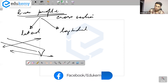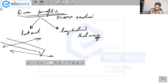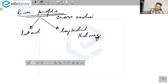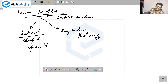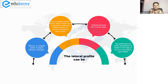The longitudinal profile is also called the thalweg. The lateral profile can be a steep V, an I-shaped profile, or an open V. The steep V or I-shaped profile occurs in gorges and canyons. The open V occurs in the later stages of river development.